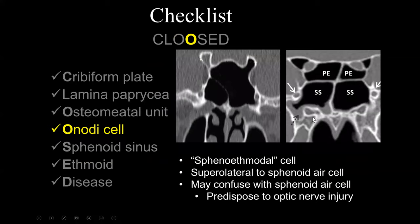Next we talk about the onodi cells. On the left is a normally aerated sphenoid sinus with some internal septations. On the right is a classic example of sphenoethmoidal air cells — the onodi air cells — located superior and lateral to the sphenoid sinus. The onodi air cells are important because the optic nerves run through the superior lateral aspect of these air cells and are in close proximity to them.